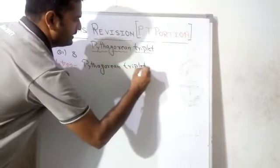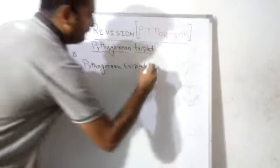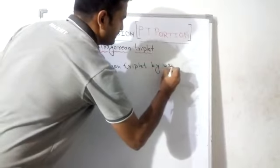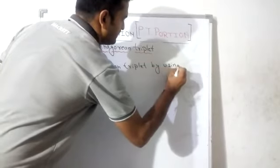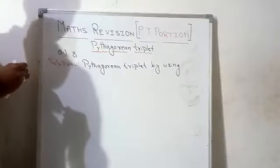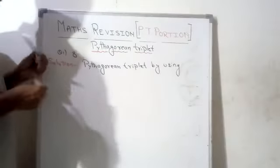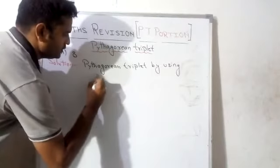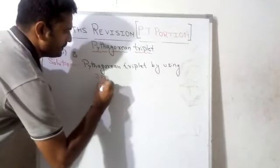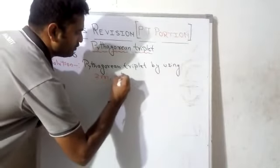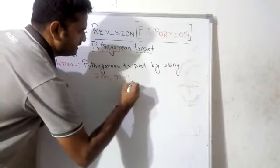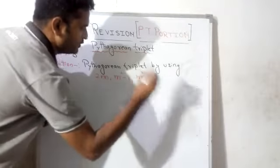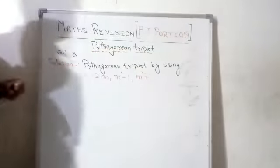We find the Pythagorean triplet by using the formula: 2m, m squared minus 1, m squared plus 1.